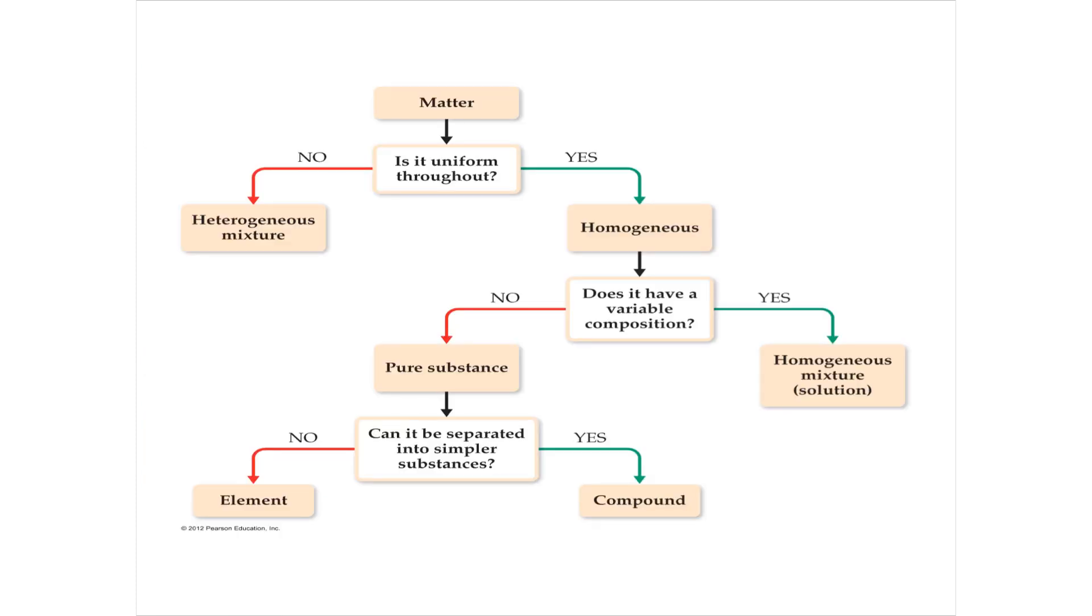So here we have a flow chart of matter that you can ask yourself different questions and be able to say all the different types of matter that there is and separate them in your mind. So if it's uniform throughout you either have a homogeneous mixture if it's uniform or if it's not uniform you have a heterogeneous mixture. You've got something together.